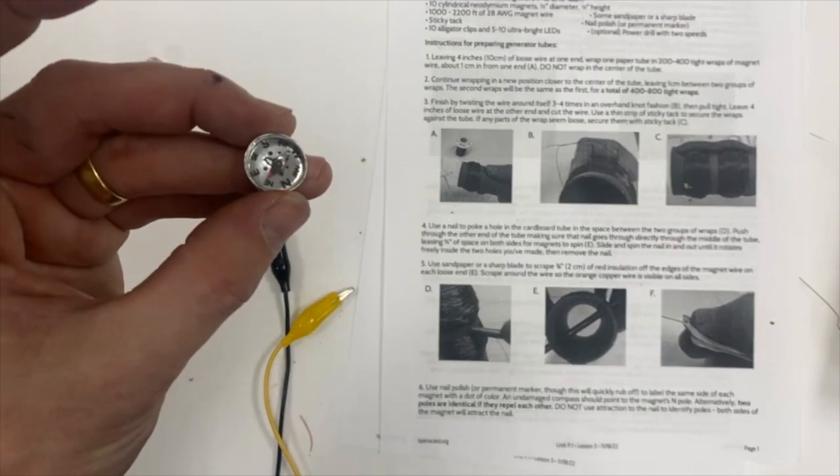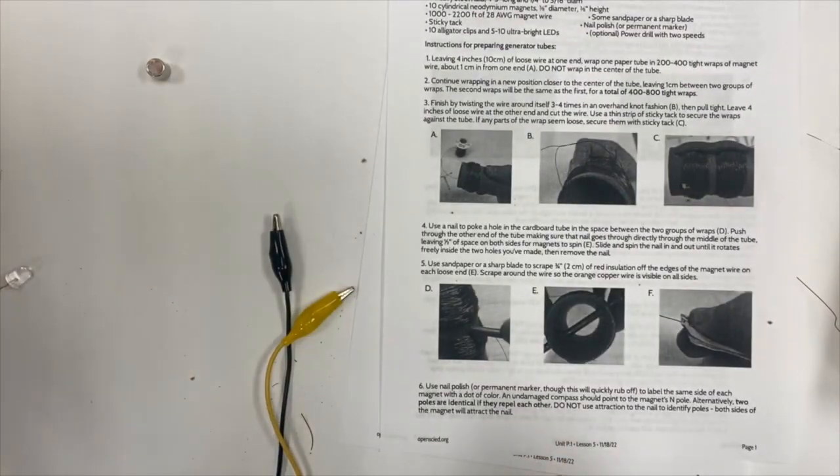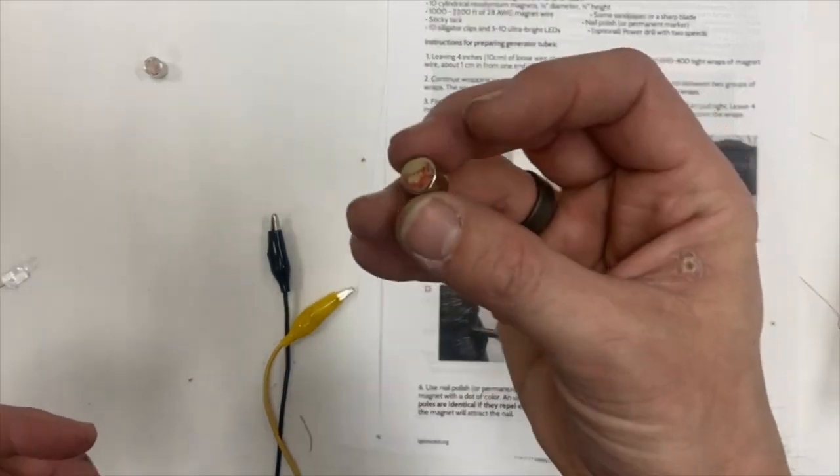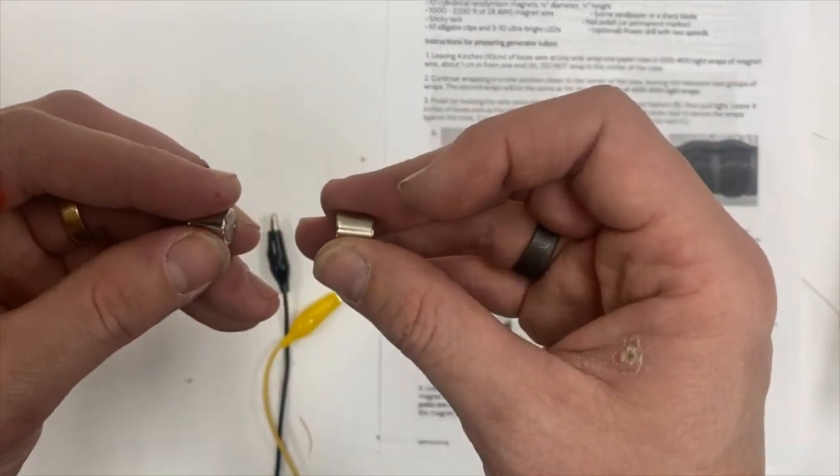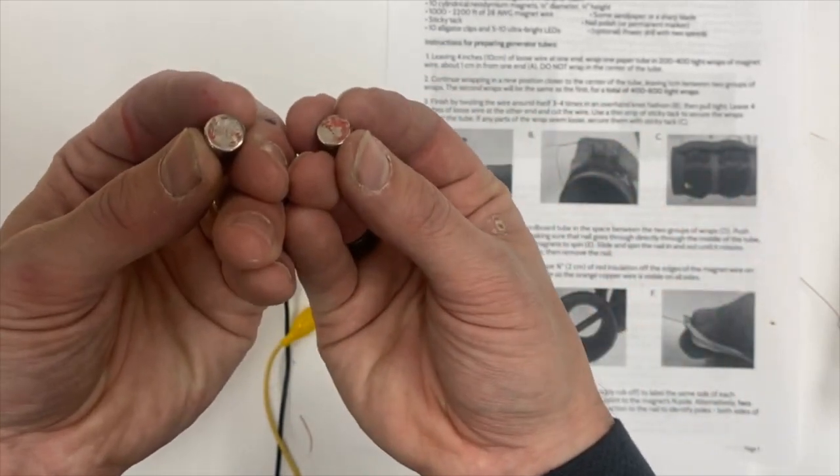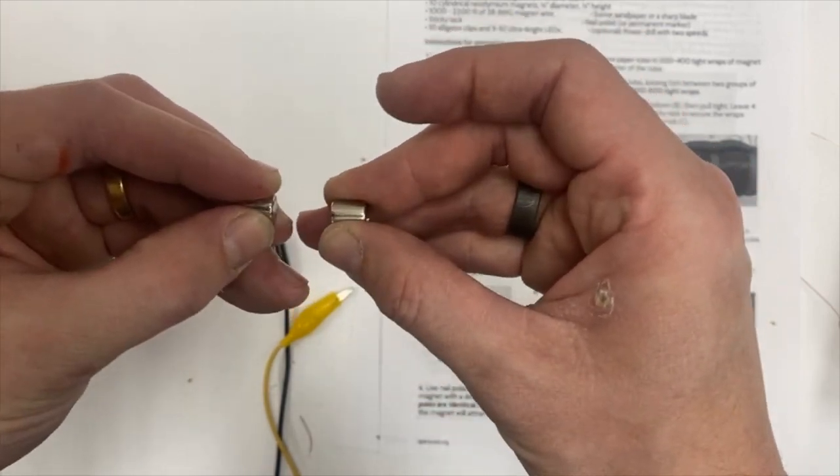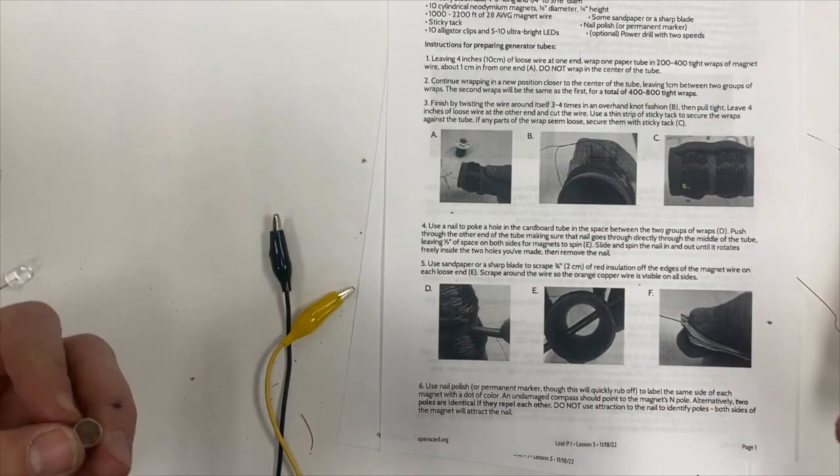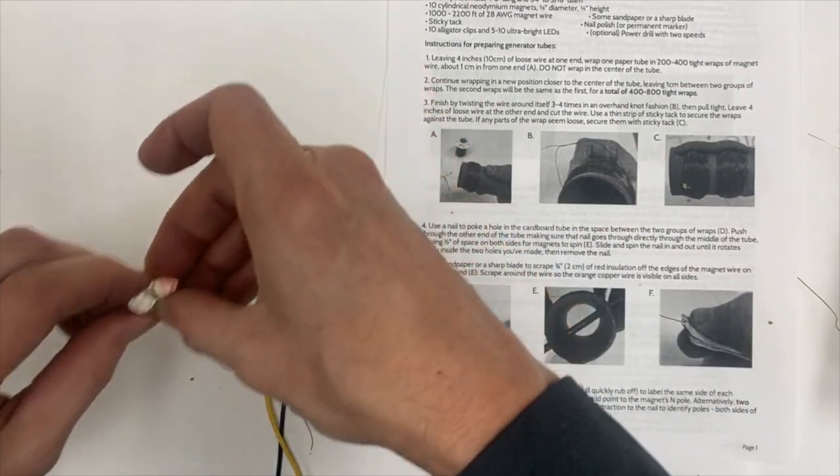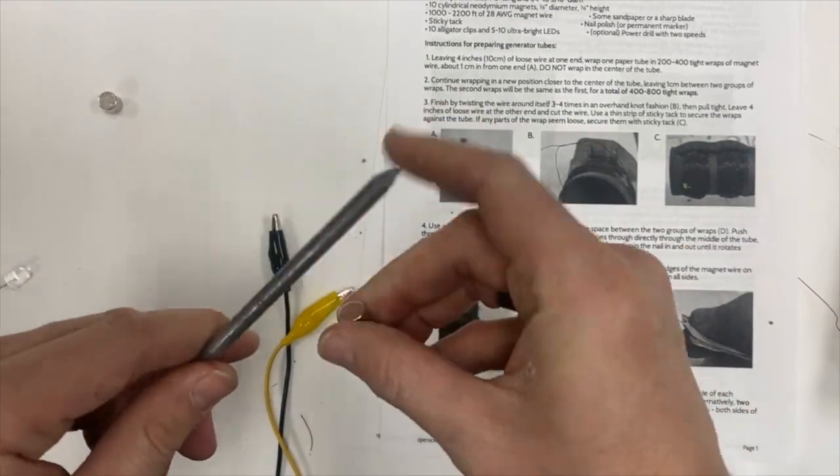You want to, if you can, use a compass to identify the north pole of the magnet. If you don't have those compasses available, or your compasses are reversed, which happens a lot, you don't really need to do this. What you do need to make sure is that the labels are on the same side of the magnet. Notice these two sides are both labeled with a little bit of red, and if I try to push them together I can't get them to attract. So whether or not they're the north pole, they are the same pole of the magnet—that is the most important thing. Don't use attraction to something else like a nail to determine the poles. Both sides will attract to the nail.